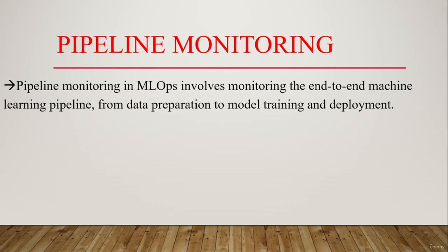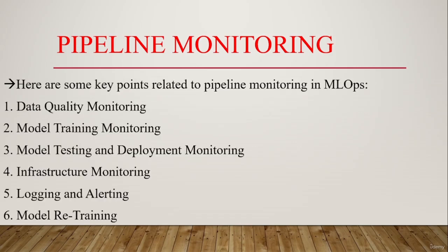In this video we will talk about pipeline monitoring. Pipeline monitoring in MLOps involves monitoring the end-to-end machine learning pipeline, from the data collection and problem definition phase to the deployment phase. Key points related to pipeline monitoring in MLOps include: data quality monitoring, model training monitoring, model testing and deployment monitoring, infrastructure monitoring, logging and alerting, and model retraining.